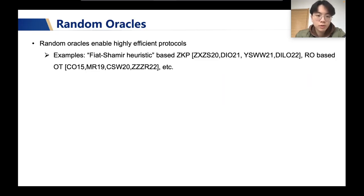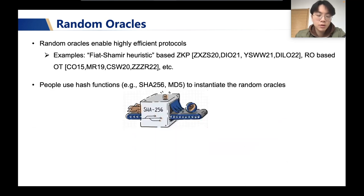Random Oracles are important in cryptography. Random Oracles enable highly efficient protocols. For example, there are some Fiat-Shamir heuristic-based zero-knowledge proofs, and there are some RO-based OT protocols. Random Oracle is an idealized setup. In real life, people always use hash functions to instantiate the random oracles.